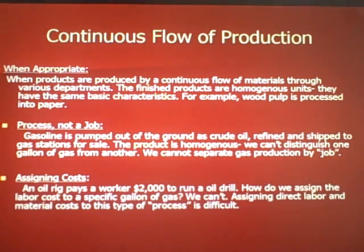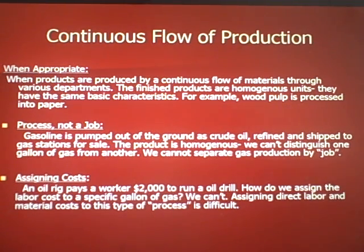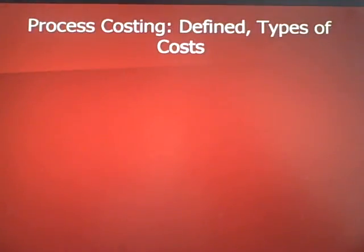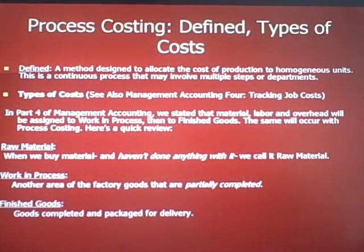So how do we assign costs? Here's another example: an oil rig pays a worker $2,000 for a period of time to run an oil drill into the ocean to drill oil. How do we assign the labor cost to a specific gallon of gas? The answer is we can't. Assigning direct labor and material costs to this type of process is difficult — and that should be your hint. The word 'process,' because what we are going to talk about now is process costing.